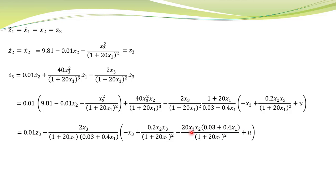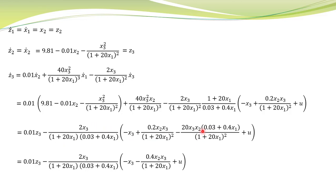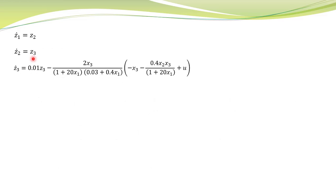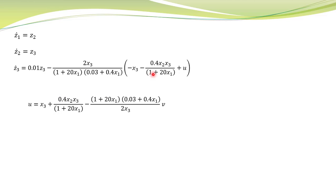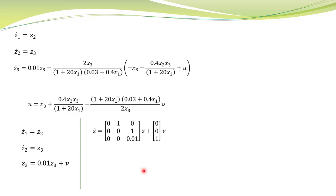These nonlinear terms can be easily cancelled by taking an appropriate control law. The system is now in the normal form, and after further simplification you have this expression. Therefore you have this normal form representation of the nonlinear system. The control input can obviously be taken to cancel out these nonlinearities — these terms will be cancelled — and this term is basically the inverse of gamma, as we discussed earlier. With this control input, the system is given by this linear state space representation.